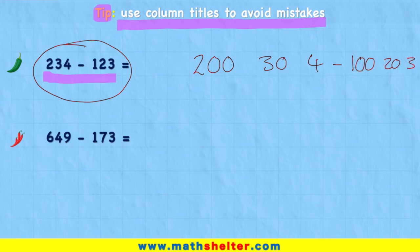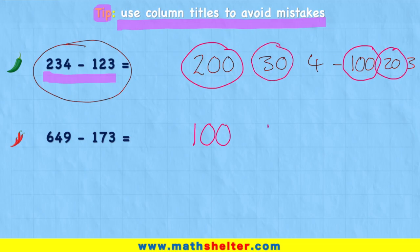So one way that we could do this is we could just look at our hundreds column. We could say we've got 200 and we're subtracting 100, that leaves me with 100. Then in my tens column I have 30 and I'm subtracting 20, that leaves me with 10. And in my ones column I have 4, but I'm subtracting 3, leaving me with 1. And then when I put all this back together, I could quite clearly see I have 111.